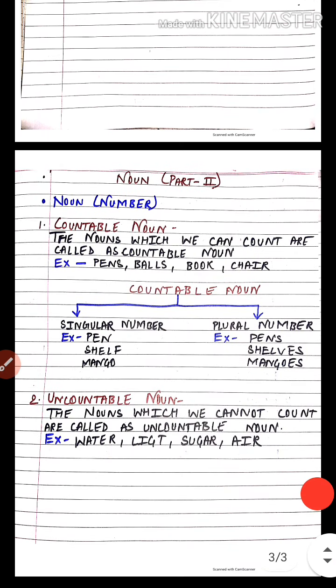Next comes noun in the form of number: countable noun and uncountable noun. The noun which we can count is called a countable noun. For example, pens, balls, books, chairs — all these things can be easily counted. Countable noun can be divided into two parts: singular number and plural number. Singular means one, and plural means more than one.